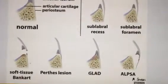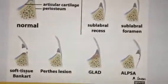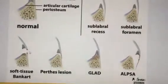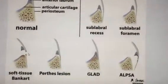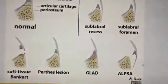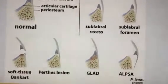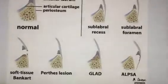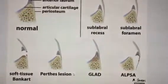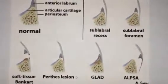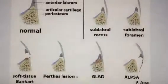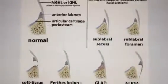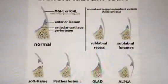To summarize: the soft tissue Bankart needs to be identified because of periosteal disruption — it will be unstable and require surgery. The same applies to ALPSA. GLAD is not associated with instability. Perthes may allow a conservative treatment trial before determining that it will require surgery. That's it for today — I hope you enjoyed this video, and please don't forget to subscribe.